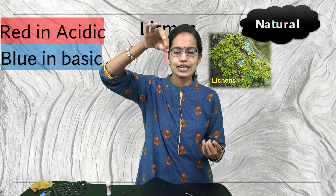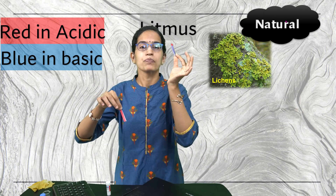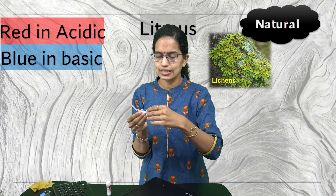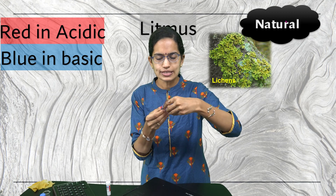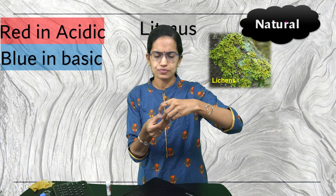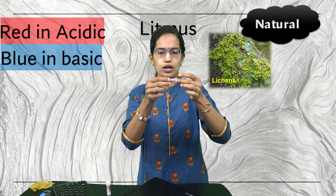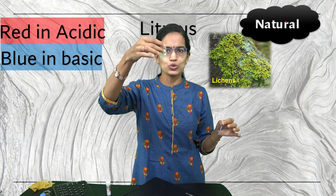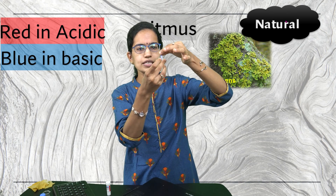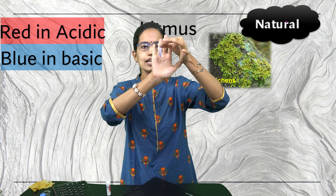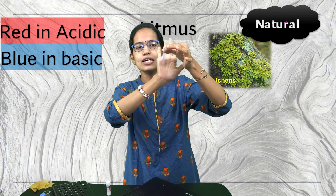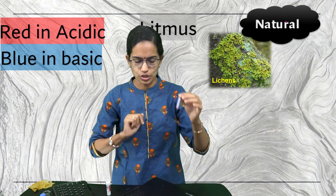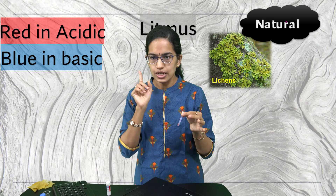I have a blue litmus paper here. Blue litmus turns red in an acidic solution. I take one strip of blue litmus paper — as you can see it is blue in color. Now I have some lemon juice, and I dip this litmus paper in it. As you can see, the color changed to pinkish red. This is how we understand that blue litmus turns red in an acidic solution.